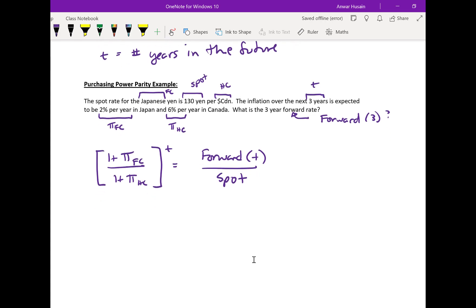Let's plug the numbers in. One plus the foreign inflation rate is 2%, over one plus 6% is the domestic inflation rate. Time is going to be three, so to the power of three.